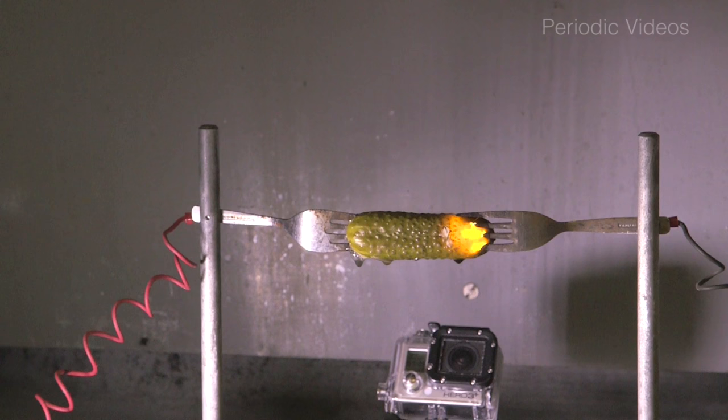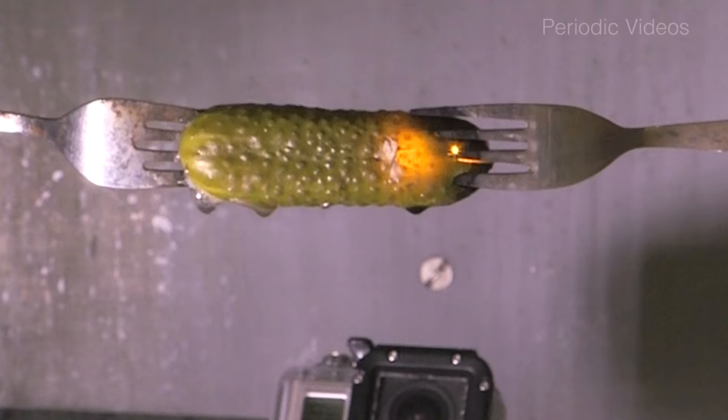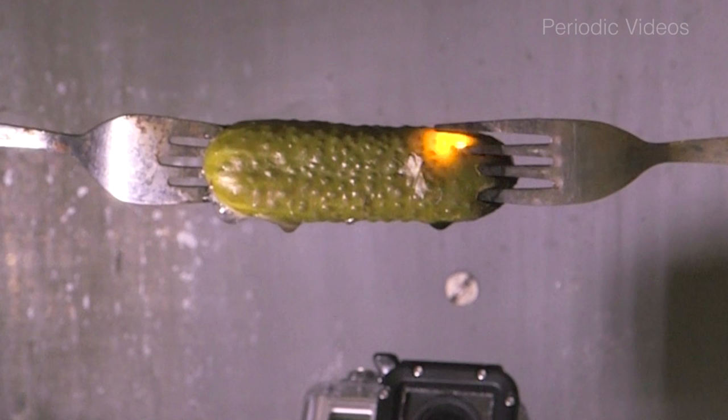So what you've got are two electrical conductors with a resistance in between and when you pass a current through it the resistor will heat up.